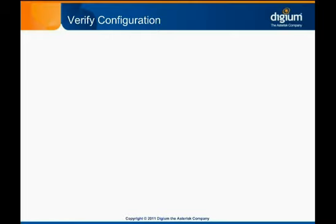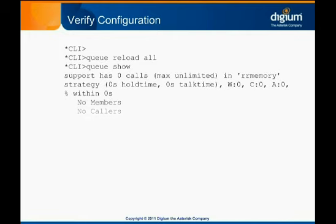Now that we have the queue configured, we'll connect to the Asterisk CLI and load our changes by running queue reload all. Now we can run queue show to verify that the queue exists. Queue show will output the information for all of the configured queues, which could be overwhelming on a system with many queues. Queue show support will show us just the support queue. We see here that Asterisk has read our configuration and our queue is now available.